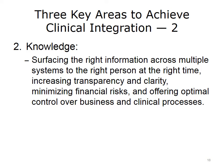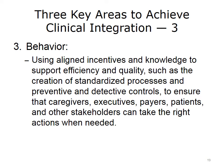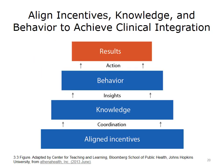The second key area is knowledge — the right information should be surfaced across multiple systems to the right person at the right time, increasing transparency and clarity, minimizing financial risks, and offering optimal control over business and clinical processes. Finally, behavior: using aligned incentives and knowledge to support efficiency and quality, such as the creation of standardized protocols and prevention and detective controls, we need to ensure that caregivers, executives, payers, patients, and all stakeholders can take the right actions when needed. Those are three key areas that must be met to achieve clinical integration. Aligned incentives, aligned knowledge, and aligned behavior are all necessary.